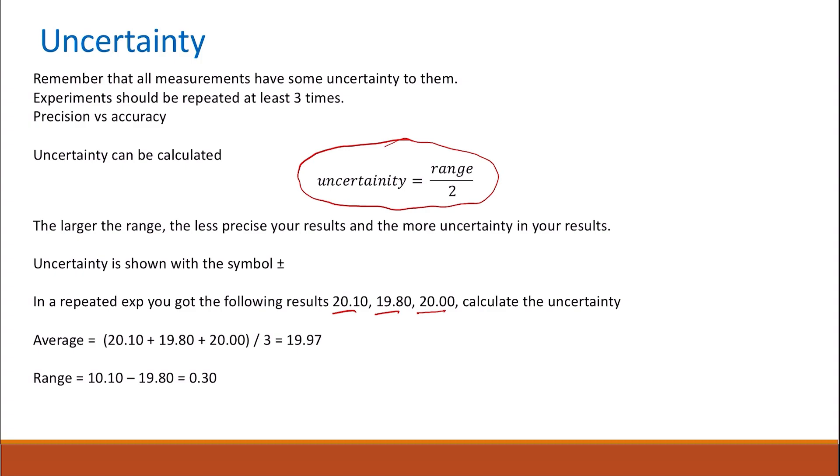Then, to calculate the uncertainty, you either calculate the range and then divide it by 2, or in one step, you can calculate it by range divided by 2. The range here, the difference between the largest and smallest value is 0.30. And the uncertainty is this value divided by 2, or range divided by 2, so 0.15.